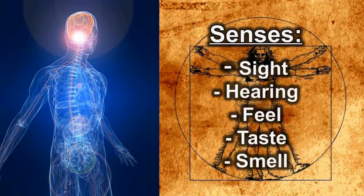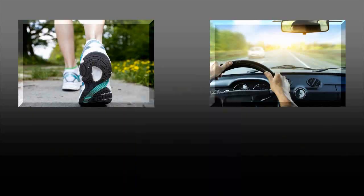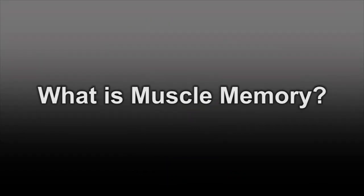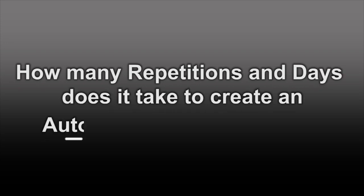Now this is an oversimplified map of procedural memories, but it works well as a foundational understanding of an automatic neural pathway, or what most people call muscle memory. Using this as a platform, we should be able to create an experiment to see how many physical repetitions and how many days of practice it takes to create an automatic neural pathway.